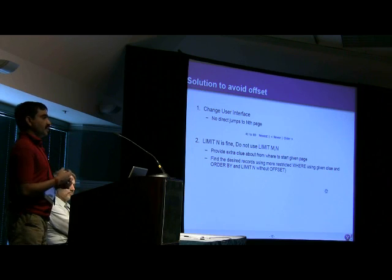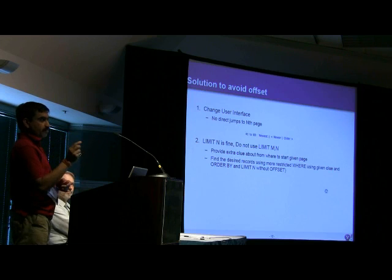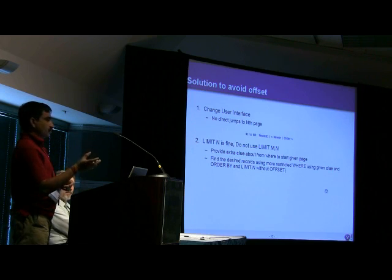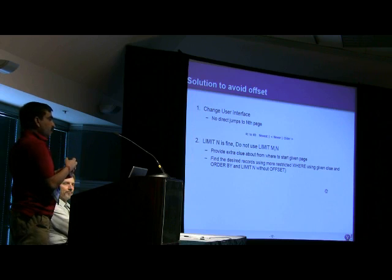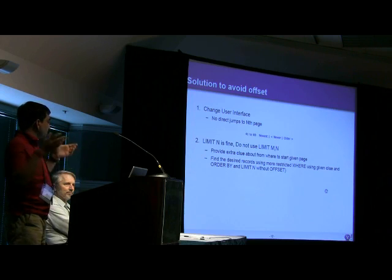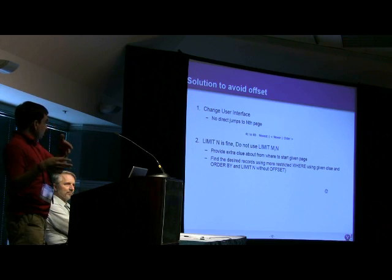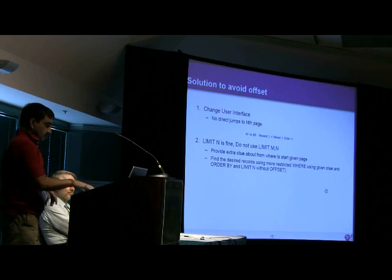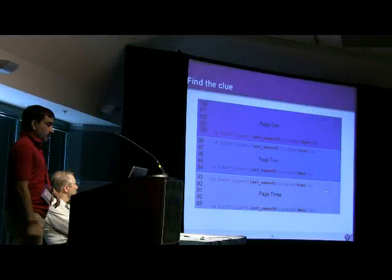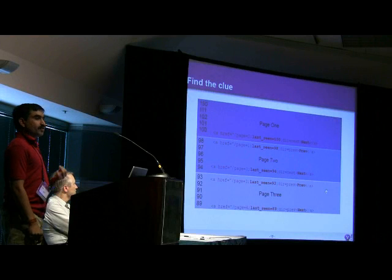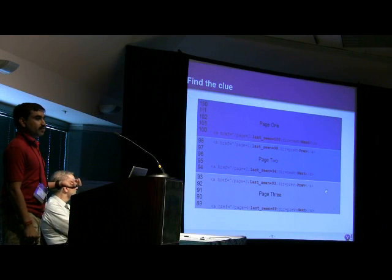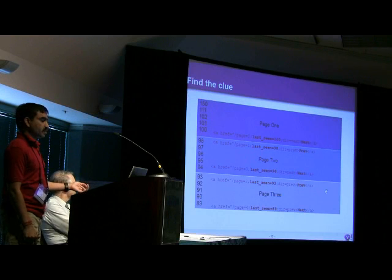So the idea here is, can we move this m from LIMIT to WHERE clause? Can we make the WHERE clause more restrictive? So that you can use index and directly find what rows it has to return. And to do that, we need some clue. And we have to provide that clue to MySQL when we paginate through MySQL.